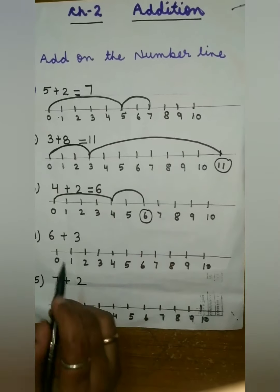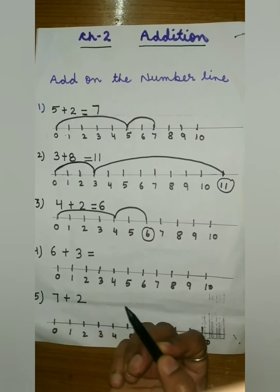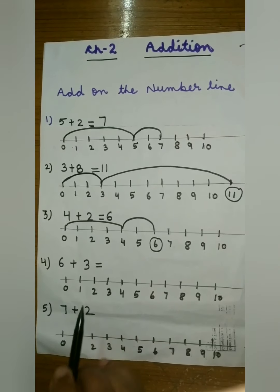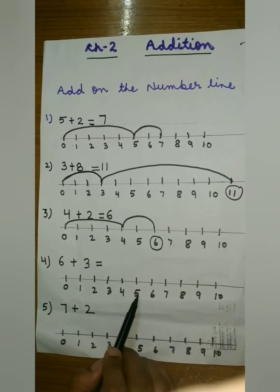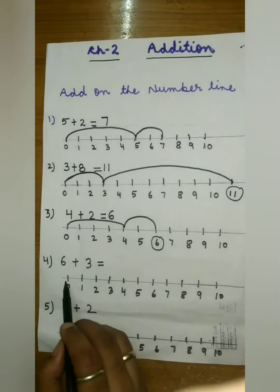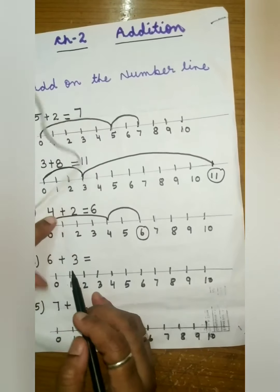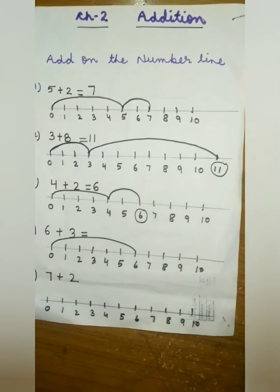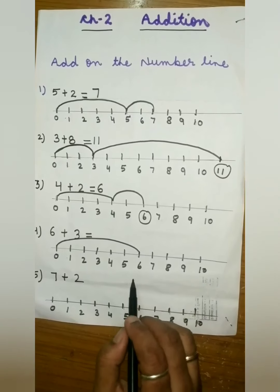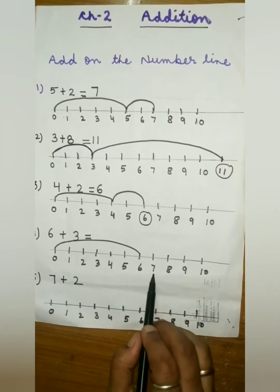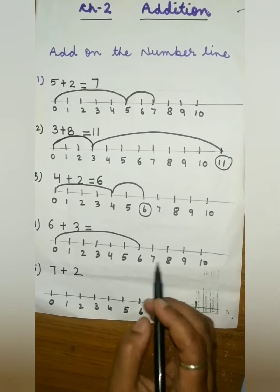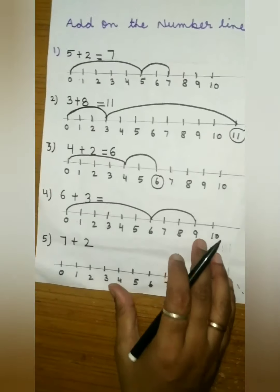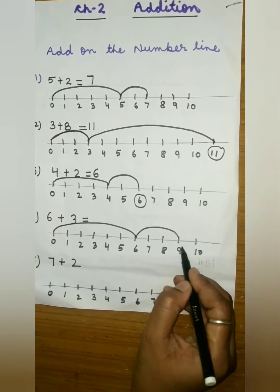The next example is 6 plus 3. From zero, count six numbers: one, two, three, four, five, six — jump from zero to six. Then from six count three numbers: one, two, three — jump from six to nine. So the answer will be nine.